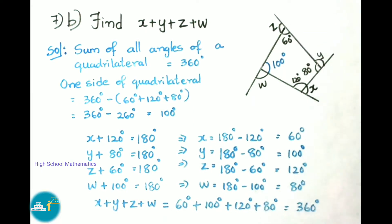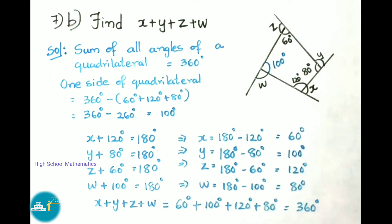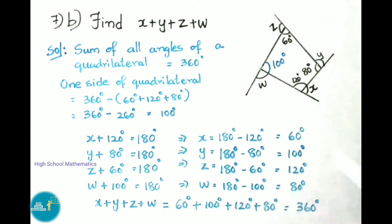z + 60 = 180, so z = 120 degrees. w + 100 = 180, so w = 80 degrees. Therefore x + y + z + w = 60 + 100 + 120 + 80 = 360 degrees.